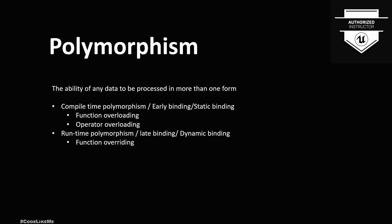Just like encapsulation and inheritance, polymorphism is a concept in object-oriented programming. There are two main categories: compile-time polymorphism, also called early binding or static binding, and runtime polymorphism, also called late binding or dynamic binding. Compile-time polymorphism covers function overloading and operator overloading, while runtime polymorphism refers to function overriding.